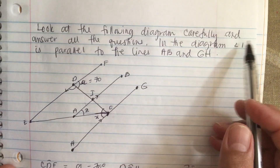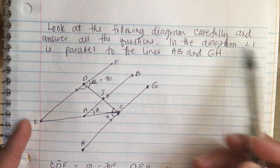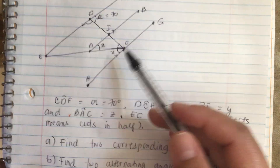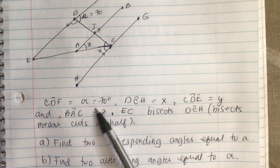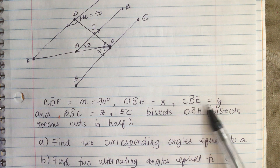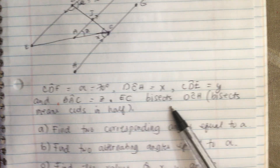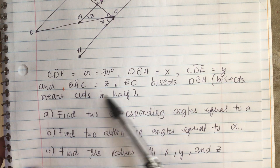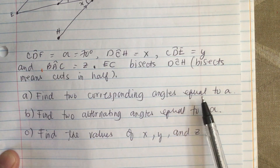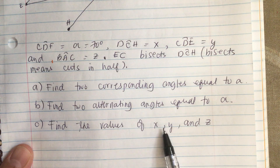Look at the following diagram carefully and answer all the questions. In the diagram, line IJ is parallel to lines AB and GH. We are told that angle A is equal to 70 degrees, angle DCH equals x, angle CDE equals y, and angle BAC equals z. AC bisects angle DCH, cutting it in half. The questions are: find two corresponding angles equal to A, find two alternating angles equal to A, and find the values of x, y, and z.